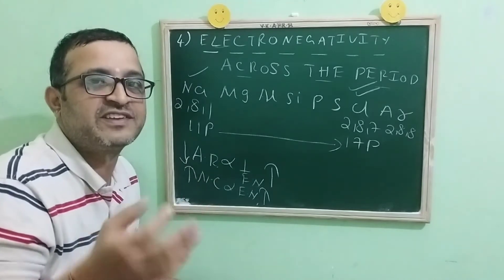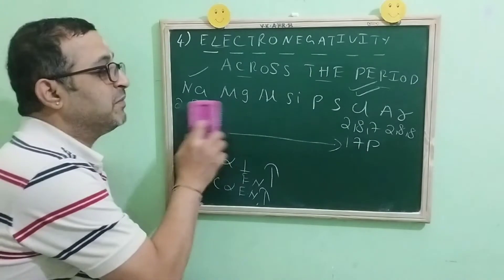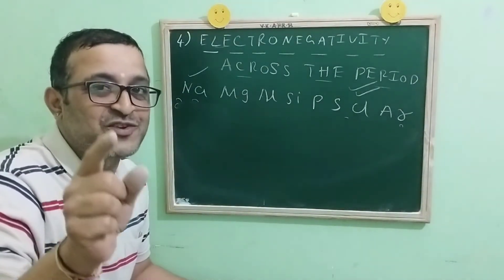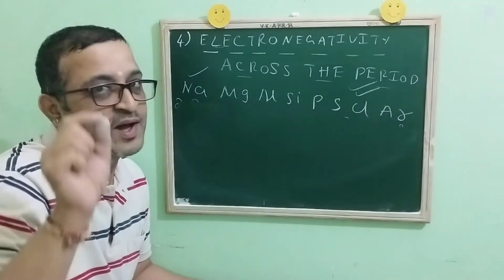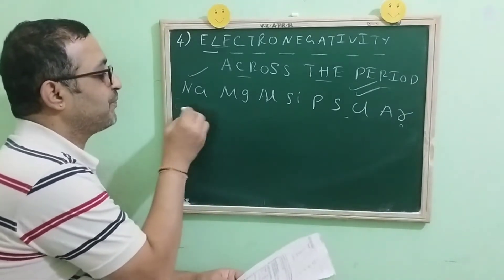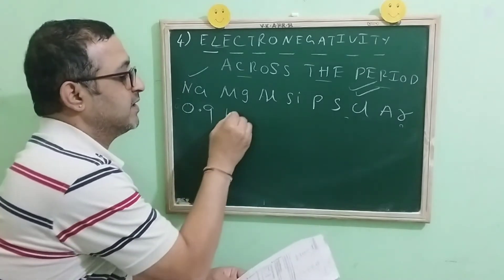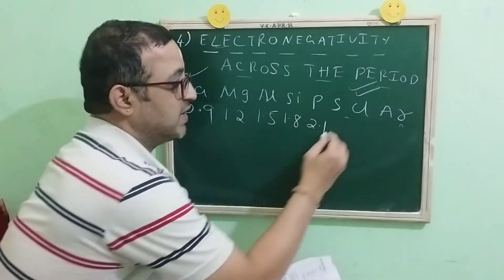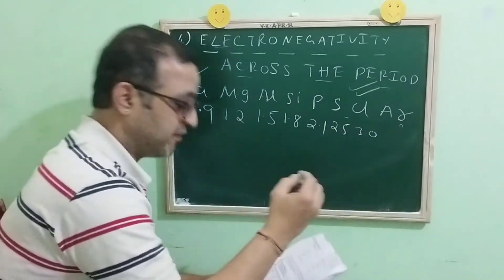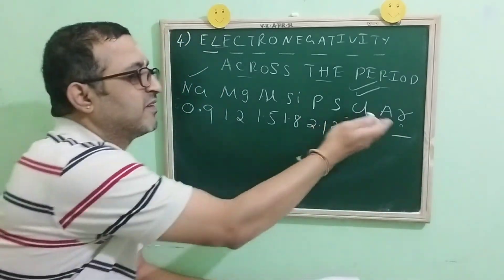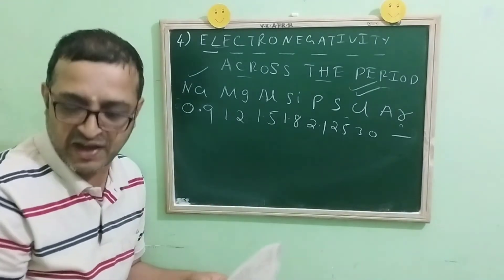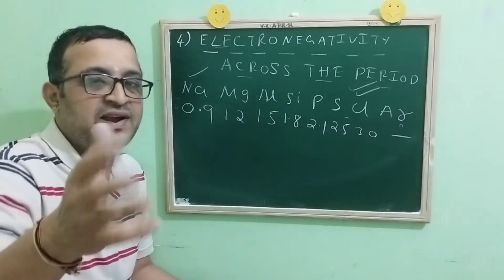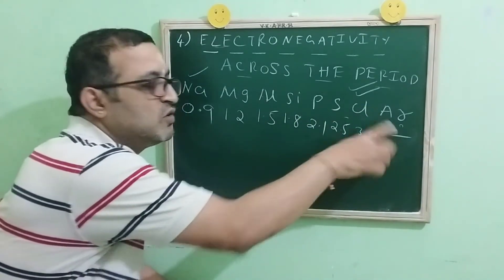Let's cross-check by writing the actual values — these are just to help understanding, no need to remember them for the board exam. Please observe the board: electronegativity of sodium is 0.9, magnesium 1.2, aluminium 1.5, silicon 1.8, phosphorus 2.1, sulfur 2.5, chlorine 3.0. Argon has no value because it does not combine with anything — electronegativity applies within a molecule, and argon forms no molecules.